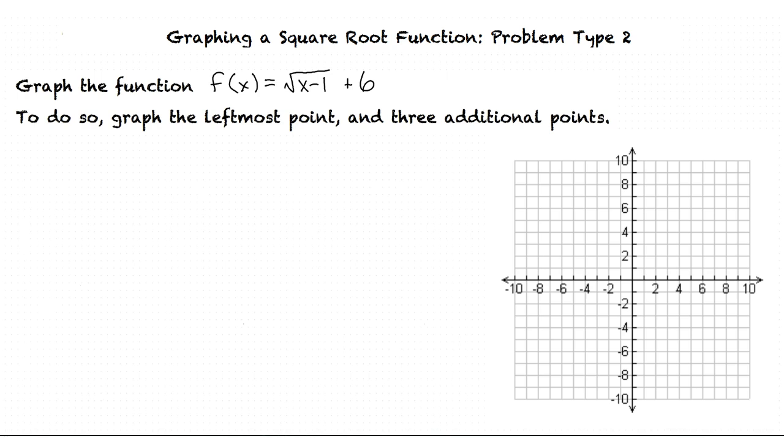What do they mean by the leftmost point? That is a very important question. What they mean by the leftmost point is the lowest value of x that, when input into the problem, will still give us a real number. There are x values that won't give us real numbers? When we have a function that has a square root, there definitely is.